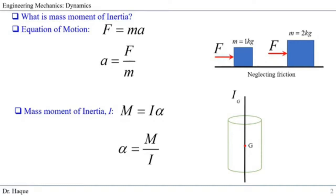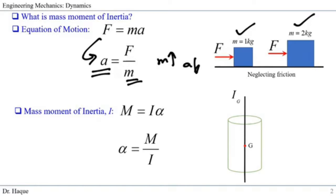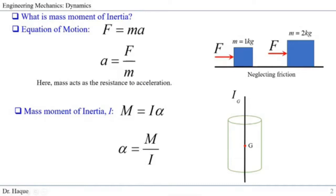F equals ma, where a is acceleration. In the equation of motion, if we apply the same amount of force to two objects — one box is one kilogram and the other is two kilograms — what acceleration or change in velocity will happen? For the same amount of force, the acceleration depends on the mass. The higher the mass, the lower the acceleration. So mass is acting as a resistance to acceleration.